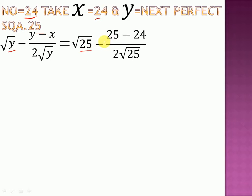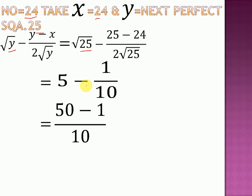So after that, square root of 25 equal to 5 minus 25 minus 24 equal to 1 upon 2 root 25 equal to 10. Now after that, take the LCM.